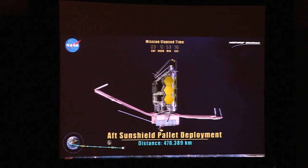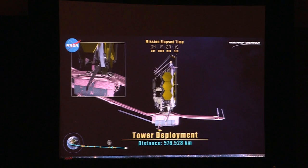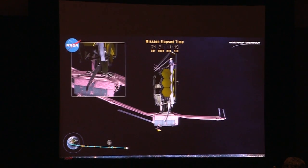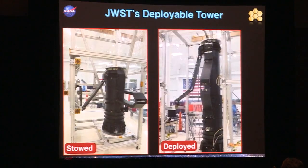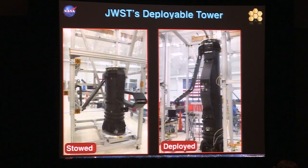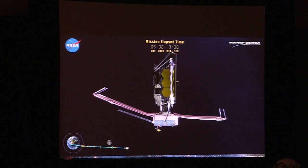After deploying the pallets, the next step is achieving thermal separation between the telescope — the OTE — and the spacecraft bus, which has all the warm electronics. We have a tower that basically telescopes up and lifts the telescope off the spacecraft bus. It's a series of nested composite cones driven by a motor to extend and deploy. The cable trays are designed so that as the tower deploys, they extend and carry all the harnesses up to the OTE without any entanglements.